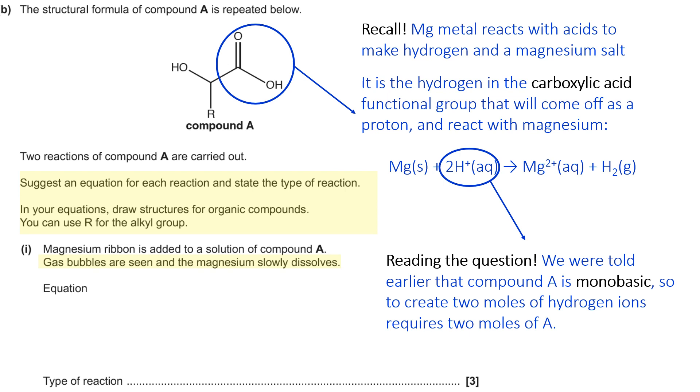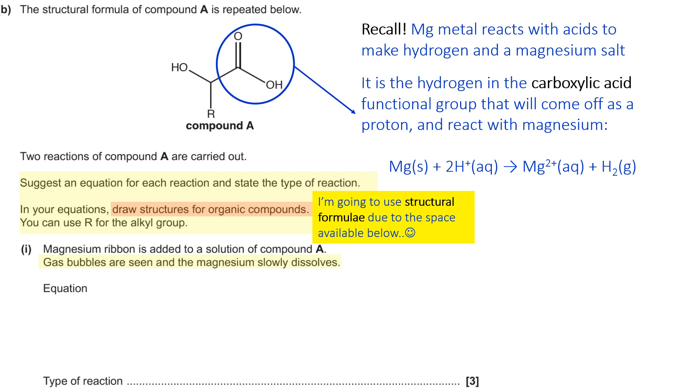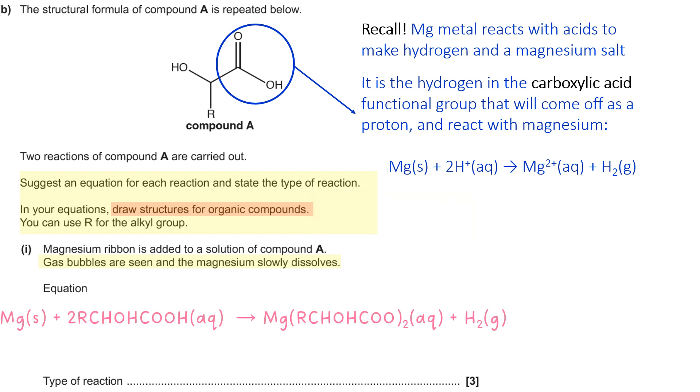Now earlier on, it said in the question that the acid was monobasic. If you remember, I did say it might be worth coming back to when I first came across that with you. So therefore, there's two H pluses. So that must mean that there's two moles of hydrogen ions. So therefore, two moles of acid A. So because there's not too much space at the bottom, I'm going to use structural formula, but you could just as easily use displayed or skeletal or combinations of those three.